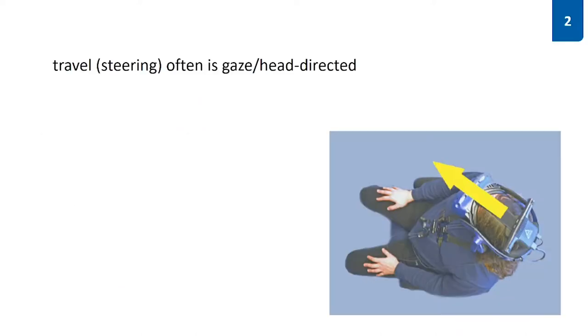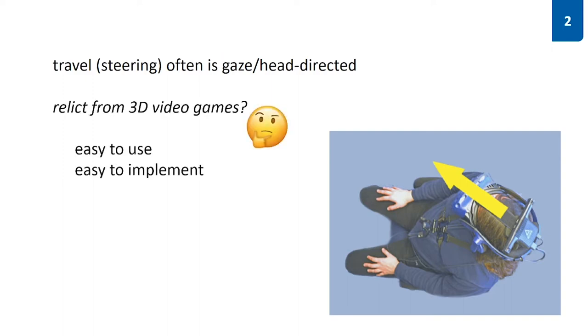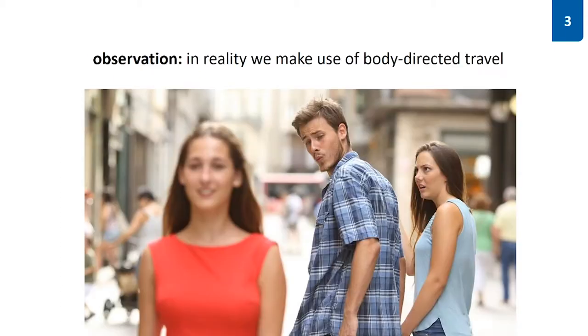Travel or steering methods in VR are often gaze or head-directed when an HMD is used. And while being different to reality, it actually works quite well. One reason might be that in first-person video games it has always worked like that because there is technically no difference between the head and the body. Now as we already mentioned, that's different in reality and we actively make use of body-directed travel.